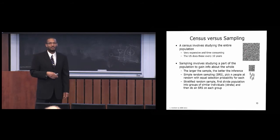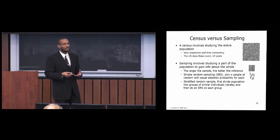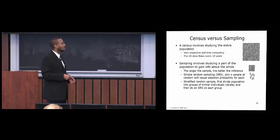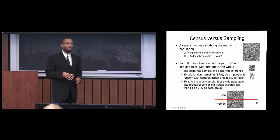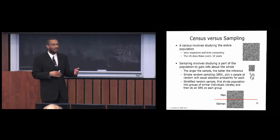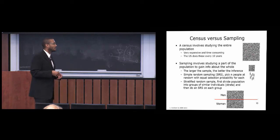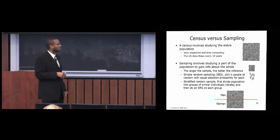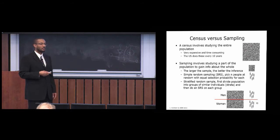Another type is stratified random sampling. You divide the population into groups that are similar, then do a simple random sample on each group. For example, if you want to compare how men and women respond to the hair growth formula, first divide the population into men and women, then randomly pick a certain number from each group — say, ten men and ten women — to participate in the trial.